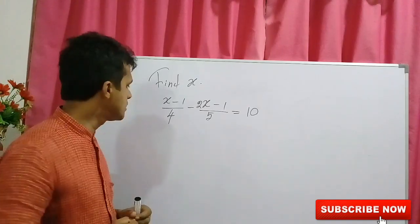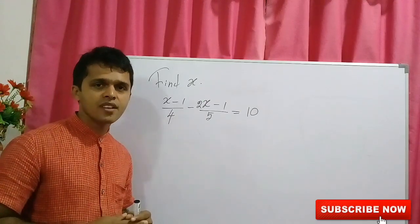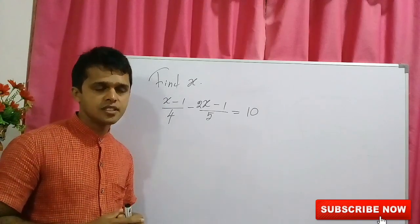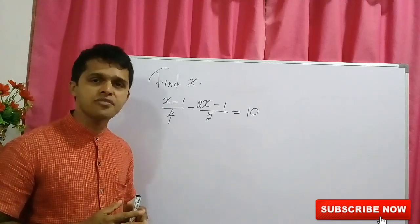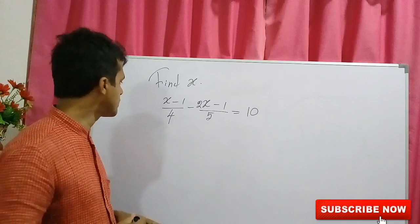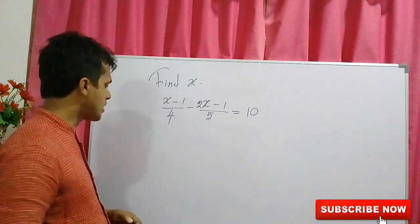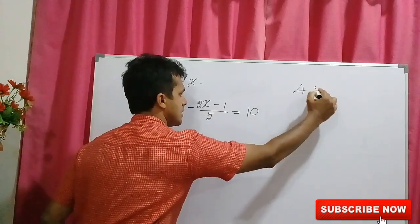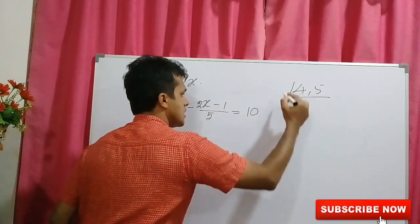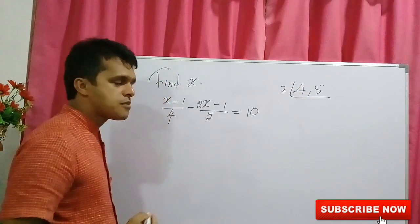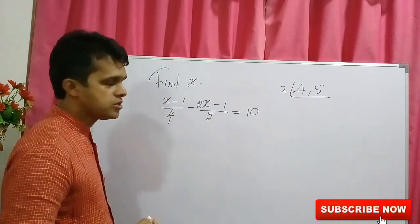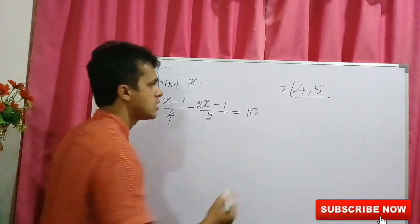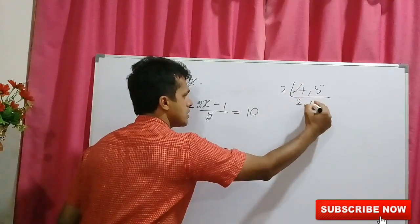First of all, how to find the LCM of 4 and 5. You know that how to find the LCM of 4 and 5. The LCM of 4 and 5 can be taken according to this style. Obtain the prime numbers of 4 and 5. First it is divided by 2, 4 over 2, 2, here 5.